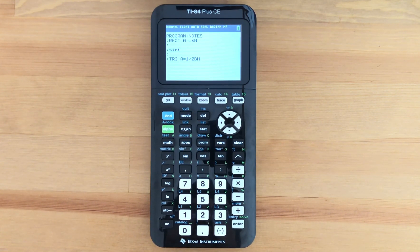So here I have a notes program where I've entered in the area for a rectangle as well as the area of a triangle. I've accidentally written the sine function in between both of those formulas.